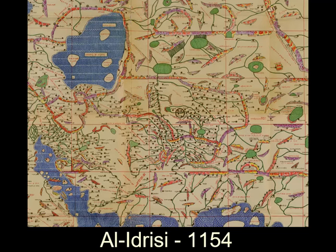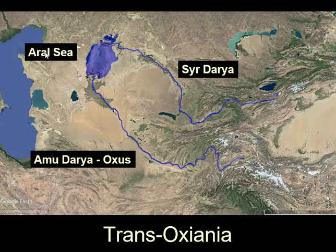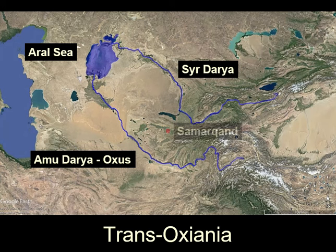The Syr Darya and Amu Darya here are in their area, rising in the Hindu Kush and going down into the Aral Sea. These were so important that in ancient times the people of the Middle East would think of this entire area — including quite often its capital of Samarkand — as the land over the Oxus, on the other side of the Amu Darya: the Trans-Oxiana.